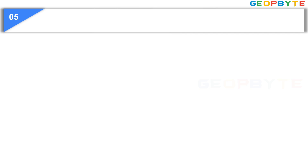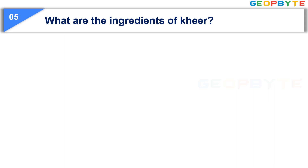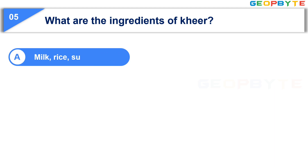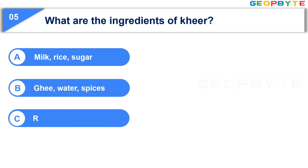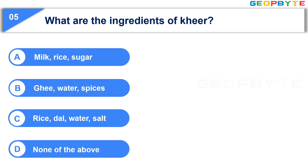Moving to the next question: What are the ingredients of Kheer? Option A, Milk, Rice, Sugar. Option B, Ghee, Water, Spices. Option C, Rice, Dal, Water, Salt. Option D, none of the above. Your time starts now.